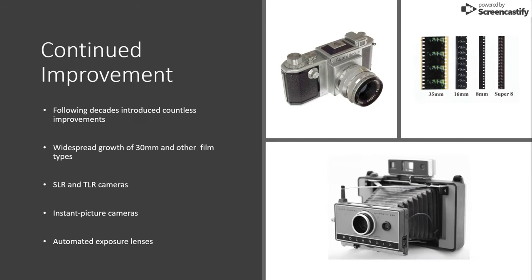The following decades would introduce countless improvements and adaptations on camera and film design, with the widespread growth of 35 millimeter film, SLR and TLR cameras, instant picture cameras, and automated exposure lenses.